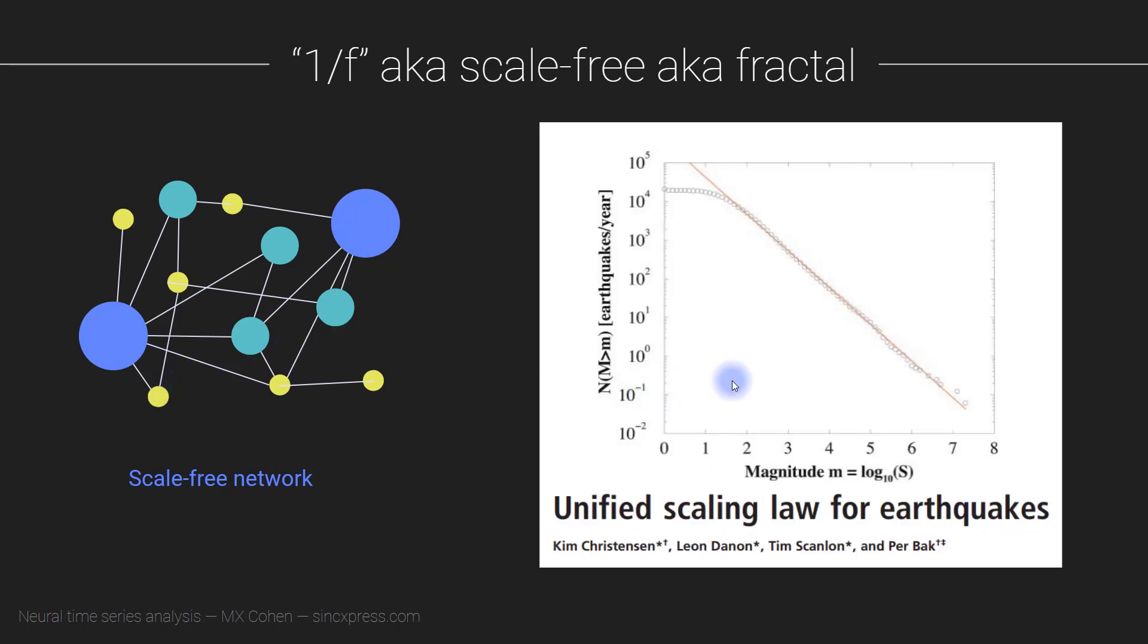Here, you see another example of a scale free organization, what you're looking at here is a plot of the magnitude of earthquakes, as a function of the frequency of earthquakes. And so what you see is that when earthquakes are really, really big, really powerful earthquakes, are very, very rare, they don't often happen, they don't even happen once a year, they happen once every 10 years or so. And as the magnitude of the earthquake gets smaller, then the frequency increases.